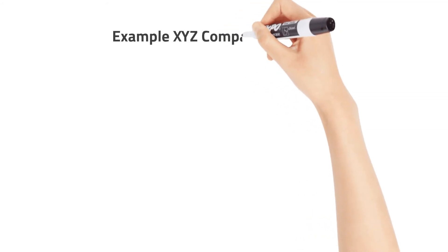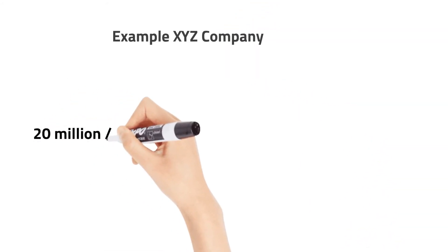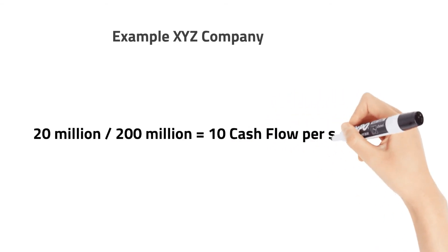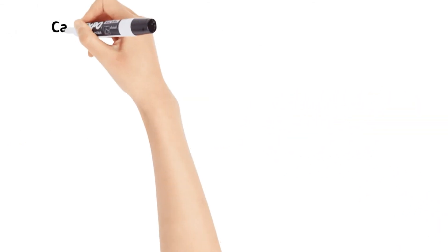For our example, we can assume that XYZ Corporation has 20 million shares and a cash flow of 200 million. This means its cash flow per share is $10 per share.